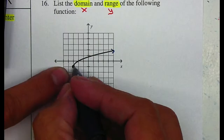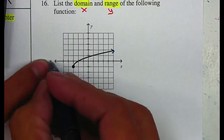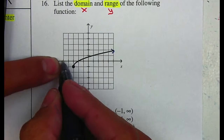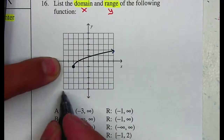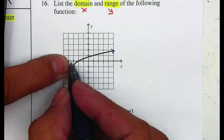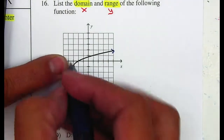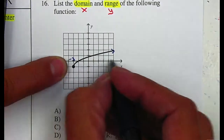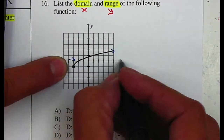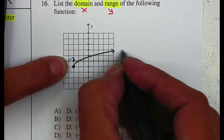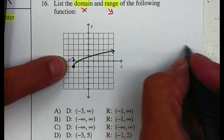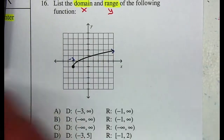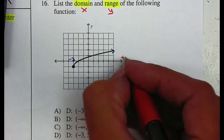Now, my x values — at what point do I start seeing a graph? If you notice right here, even if I plug in a negative 5, I won't be able to find a graph. The first point where I start getting a graph will be at negative 3. So from negative 3 all the way to 5 and beyond 5 — the arrow continues, so this graph is going to continue all the way through. It will be from negative 3 to positive infinity.